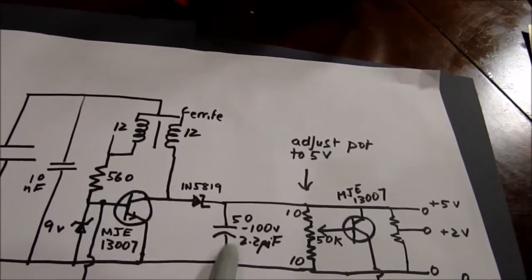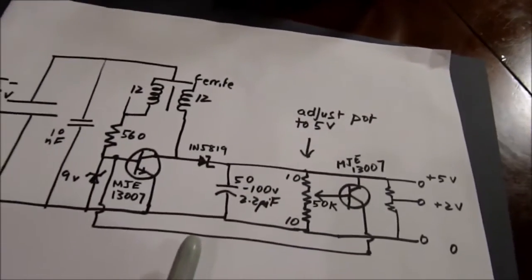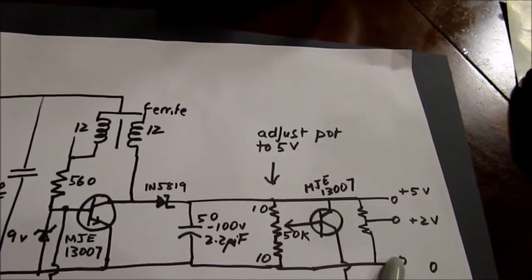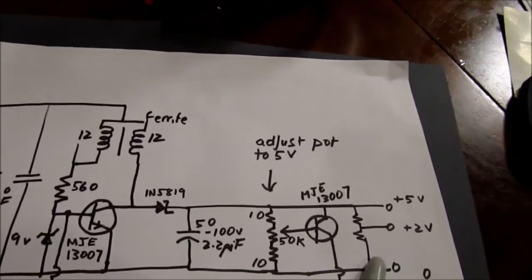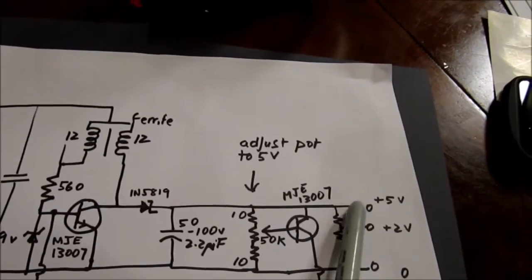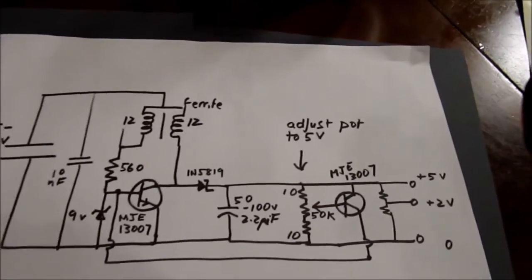You can change the voltage on the emitter and therefore change the voltage on the base of this. So you've got feedback and therefore you can change the voltage that you get on their capacitor. Now typically phones use 5 volts.